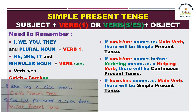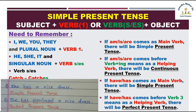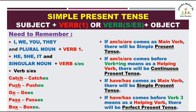Similarly, agar have ya has as a main verb aaye — matlab koi extra verb nahi aaya — toh yeh simple present tense hai. Lekin agar have ya has ke baad verb 3 (third form) aaya, toh in ka istamal as a helping verb hua hai, aur wahan simple present nahi balki present perfect tense hai. Iske saath hamne simple present tense complete kar liya. Let's move on to simple past tense.